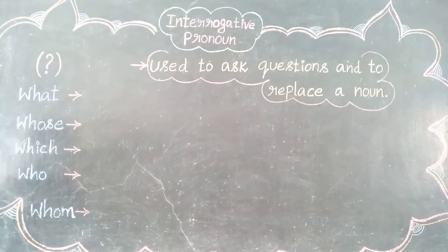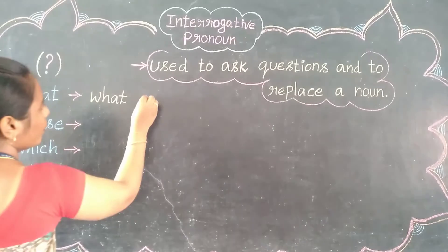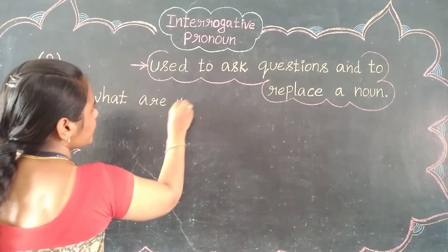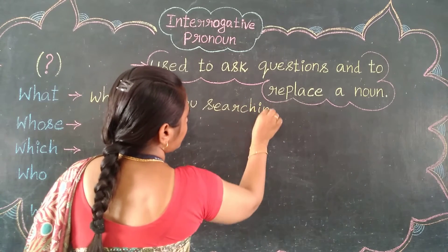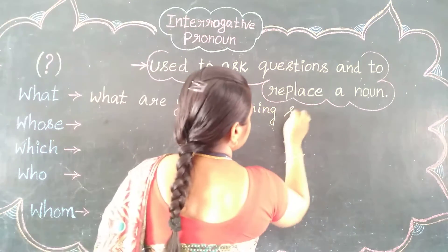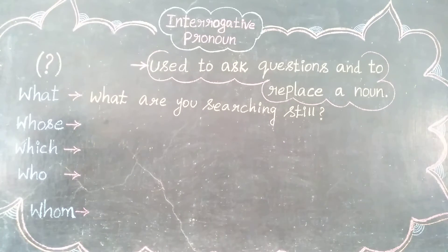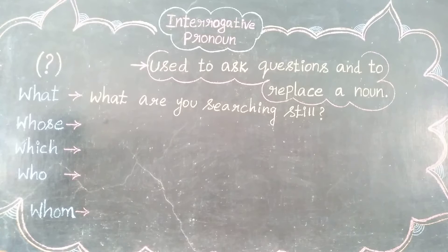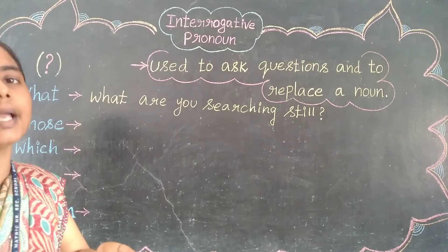Let's see some examples using these words. First: What. Example — 'What are you searching still?' We use this to ask questions. The answer could be: 'I am searching my book' or 'I am searching my note' or 'I am searching my pencil.'